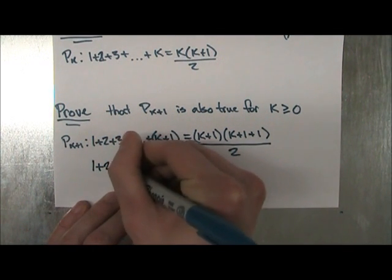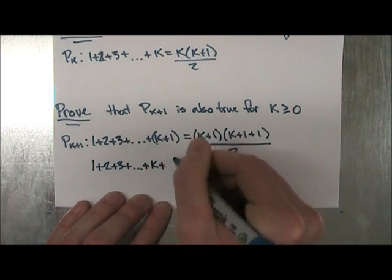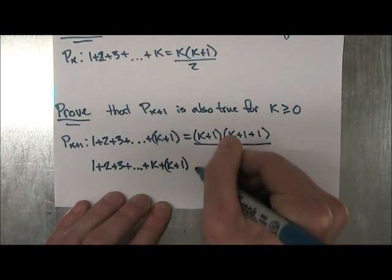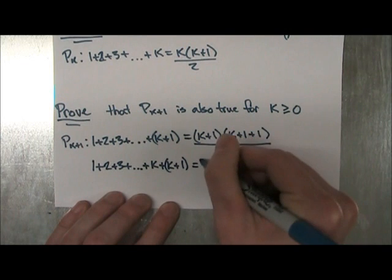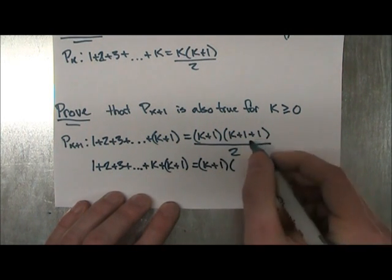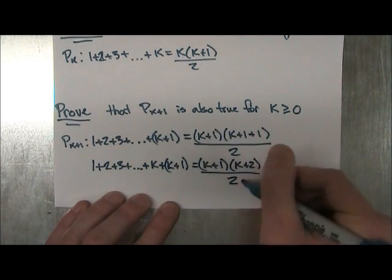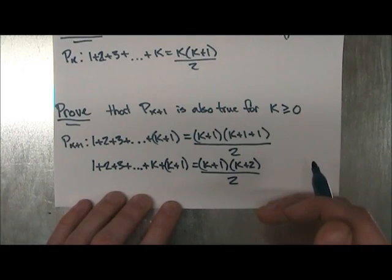So we're going to write that in, you're going to see why in just a second. So 1 plus 2 plus 3 plus dot dot dot plus k plus this term here, k plus 1, equals the right hand side, which I'm not really going to touch, except I'm going to put these two ones together. So k plus 2 over 2. So this is what we have so far, and I hope it makes sense up to this part.